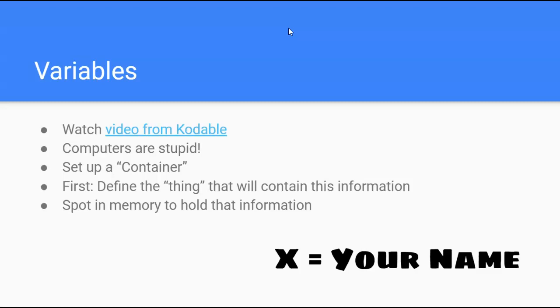So to set up a variable, programs are filled with variables. For example, if I ask you in a program to give me your name, to type in your name, the program is setting up a variable. So maybe x equals your name. It's just basically a little container, a little holder, a little spot in its memory that can contain this information. So you have to define that spot for the computer first.